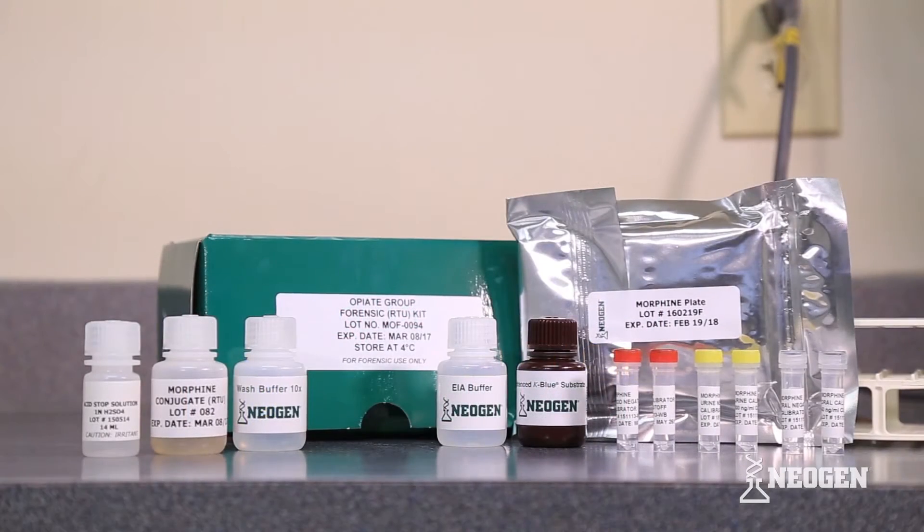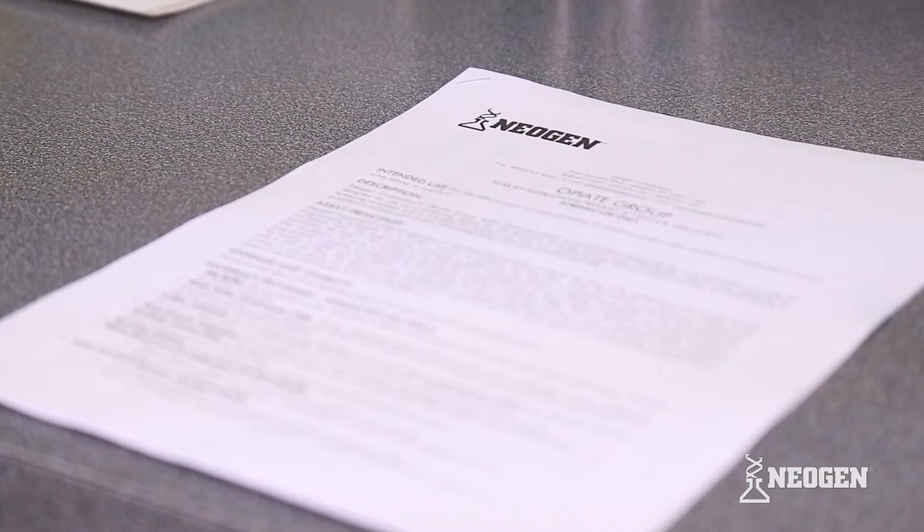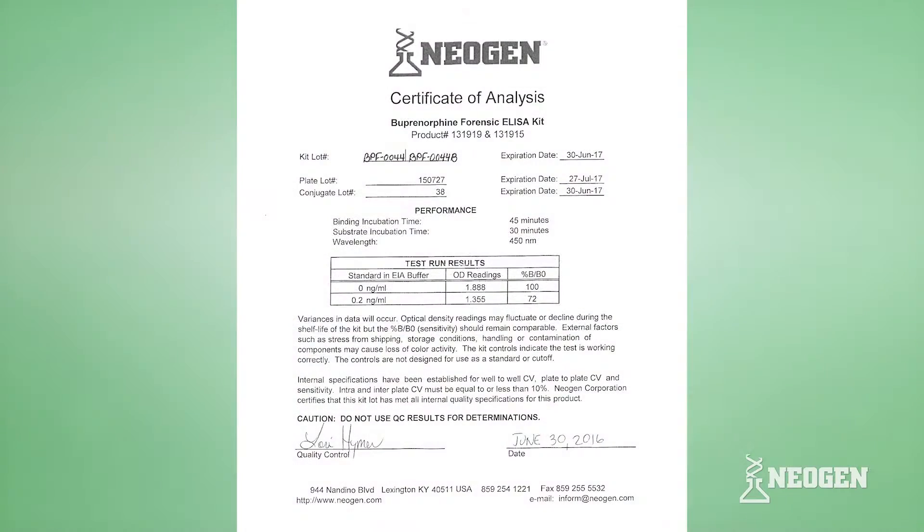Neogen Forensic RTU Kits include all of the reagents you will need to perform this assay, as well as a protocol outlining step-by-step instructions for the procedure. Also included is a Certificate of Analysis which includes important, lot-specific data like lot numbers, expiration dates, and typical data.